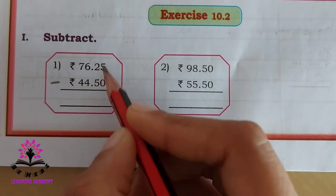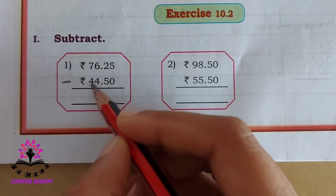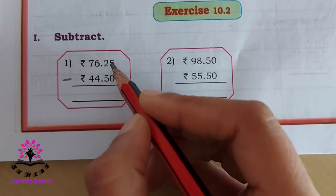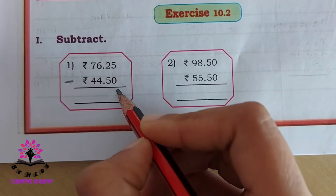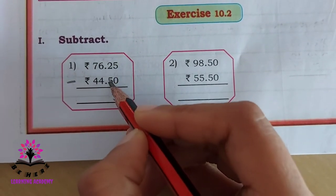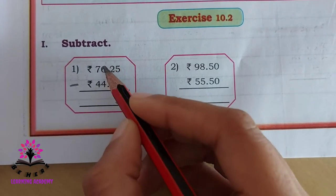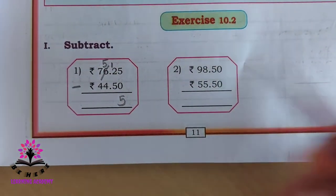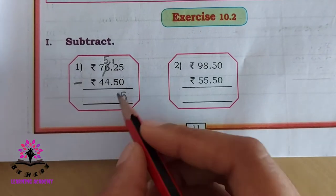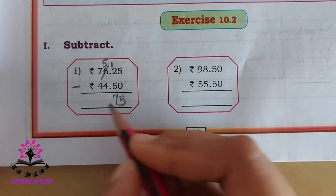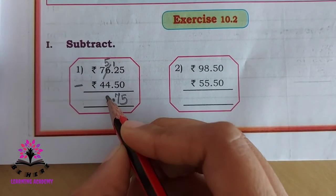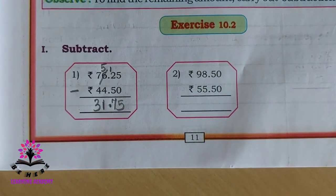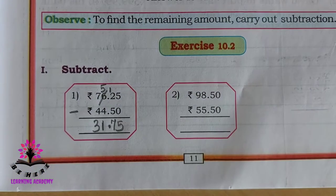How to subtract? Start from here. These are rupees, this is paisa. You have to start from paisa. 5 minus 0 is 5. 2 minus 5 is not possible, so this becomes 5, bring 1 here. 12 minus 5 is 7. 5 minus 4 is 1, 7 minus 4 is 3. So it is 31 rupees 75 paisa.